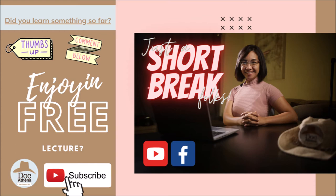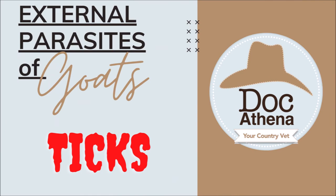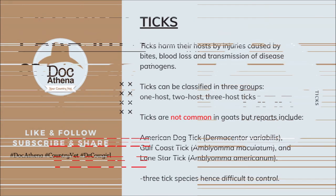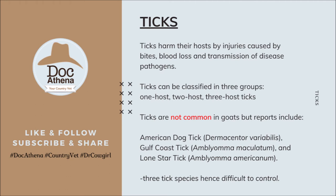Now let's talk about ticks. Ticks harm their hosts through injuries caused by bites, blood loss, and transmission of disease pathogens. This transmission happens during a blood meal, when blood carrying a blood parasite is transmitted to another animal — such as causing babesiosis. Ticks can be classified into three groups depending on the number of hosts needed to complete their life cycle: one-host tick, two-host tick, or three-host tick.